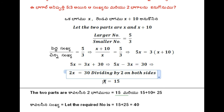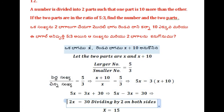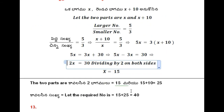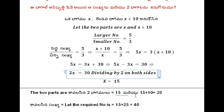x is equal to 15. So the first part — x means the smallest part — is 15. And the larger part is taken as 15 plus 10, which is 25. The sum of the two parts is 15 plus 25, which is 40.